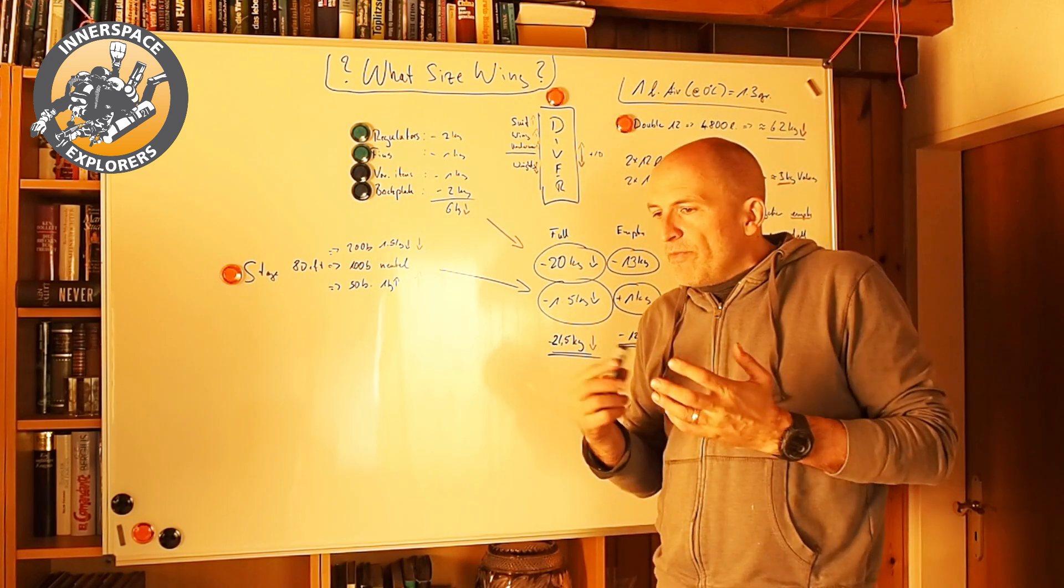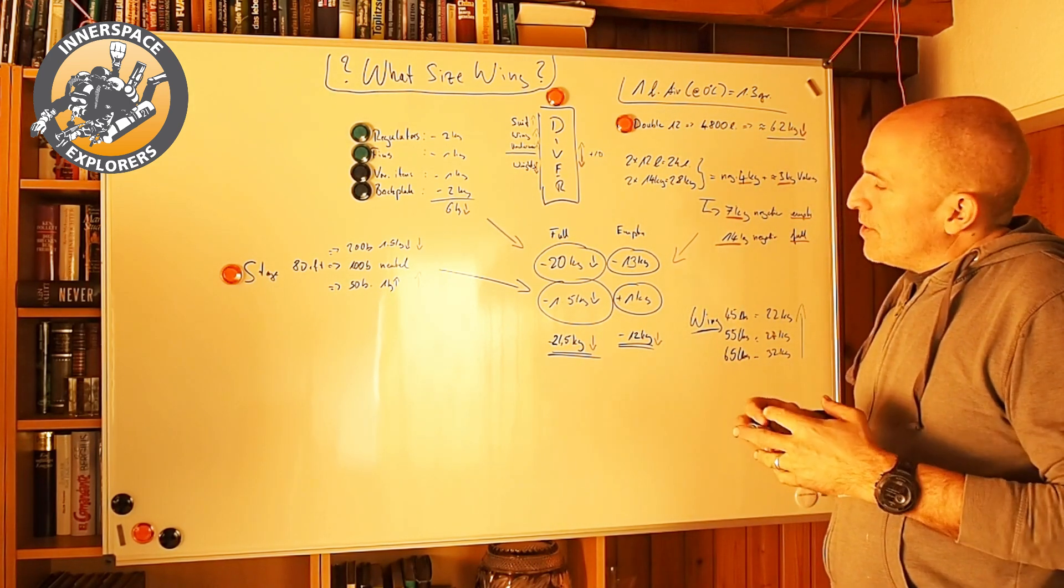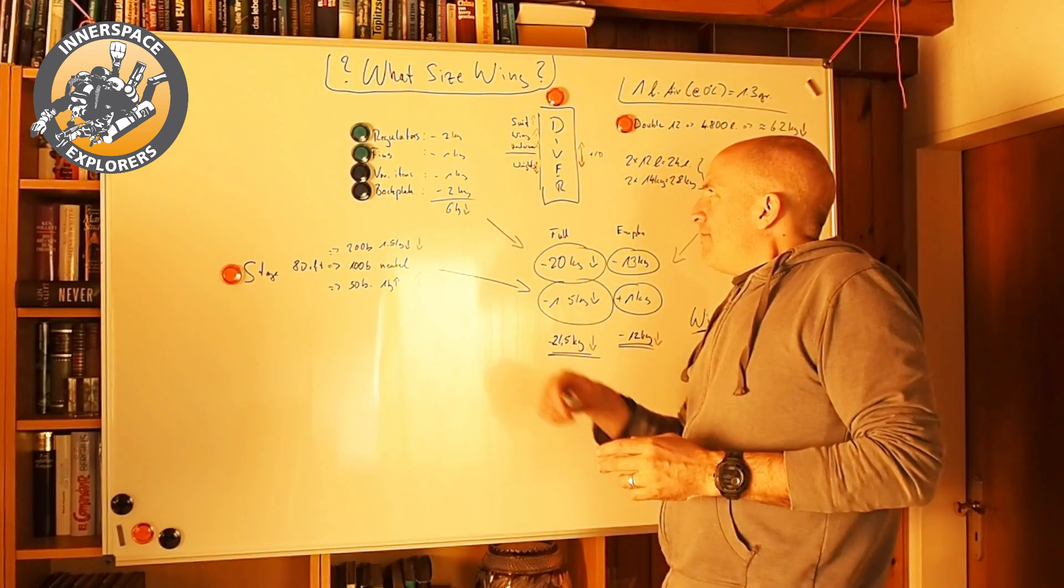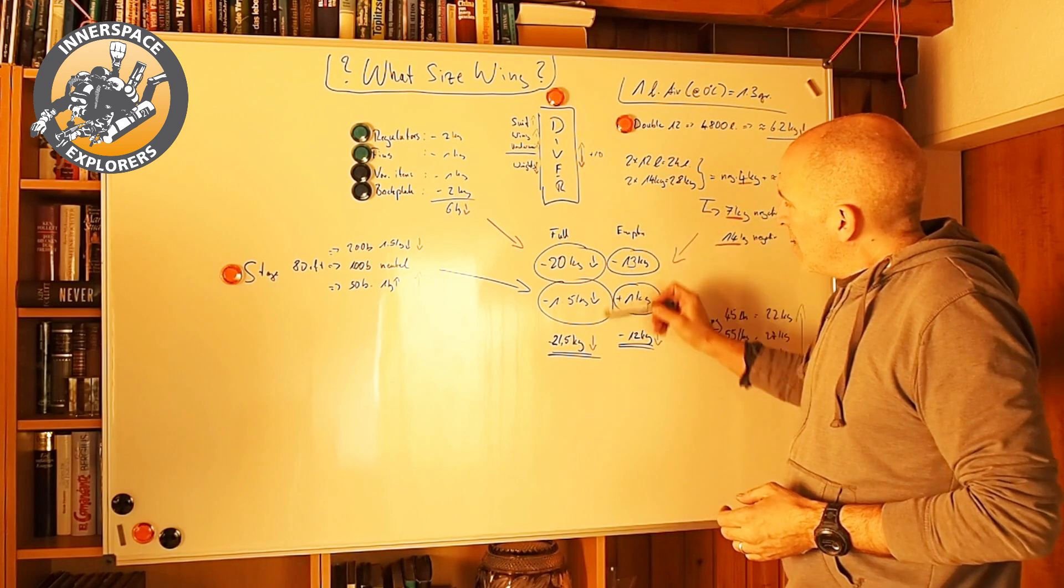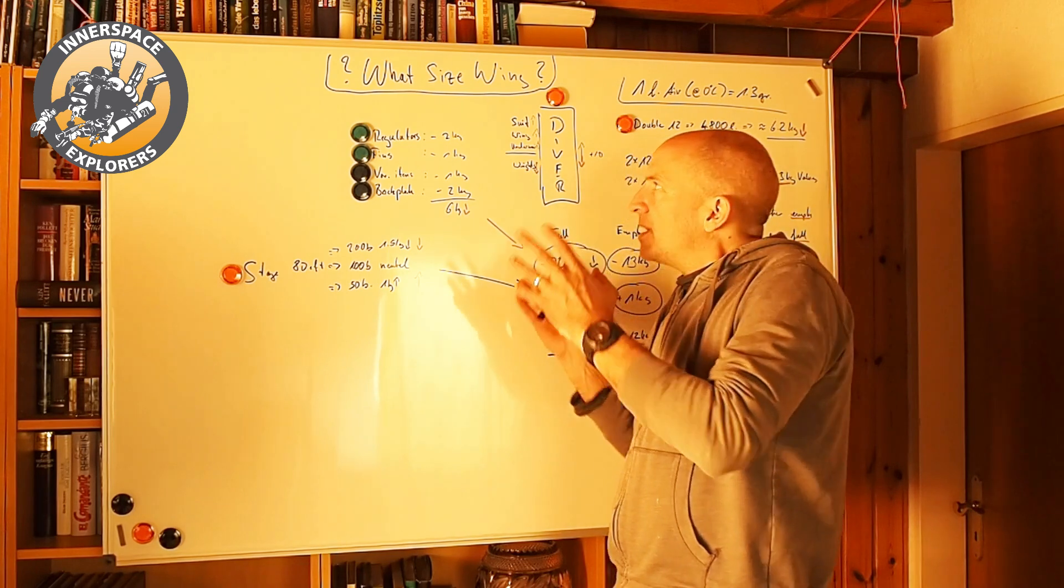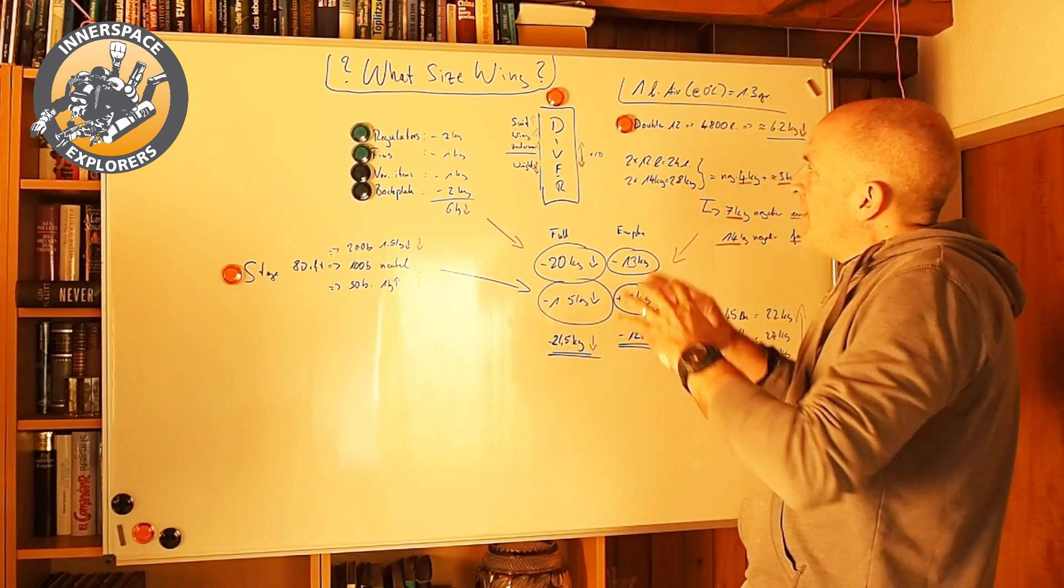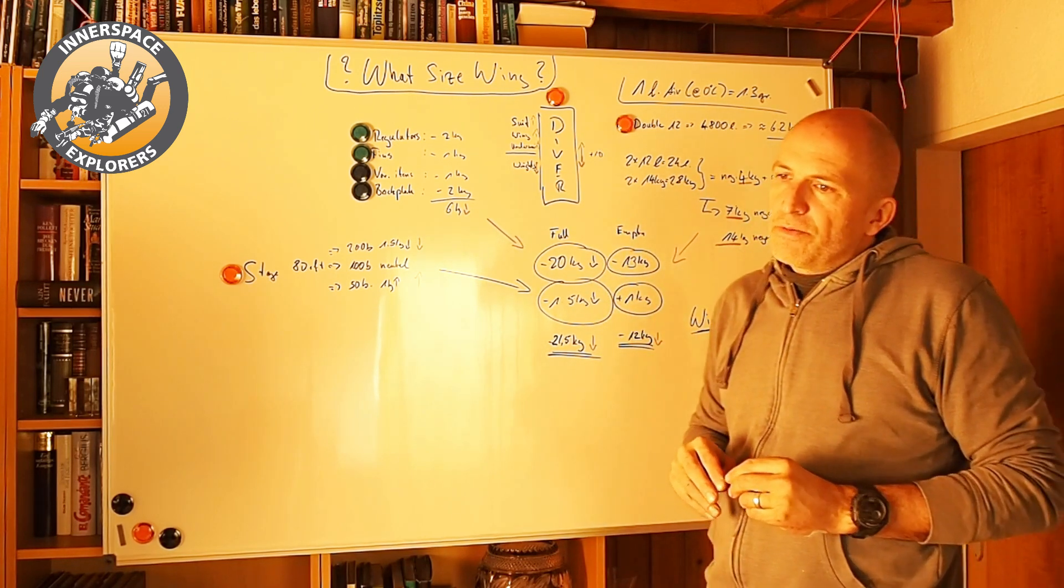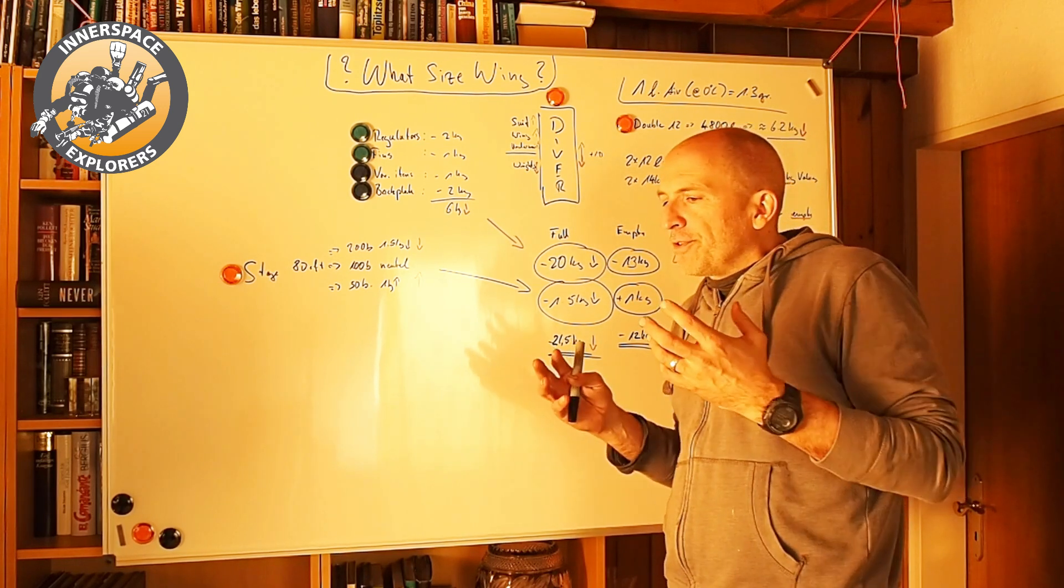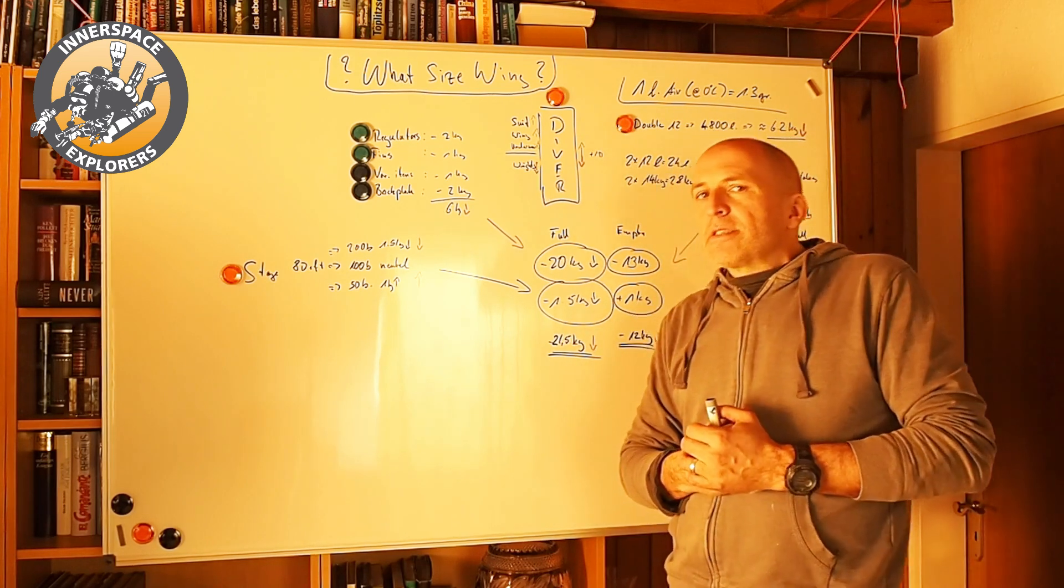So in that case, you just have to make sure, on the other hand, that you have enough weights, that in that scenario, you're still able to maintain a proper stop. But that's a different story. It doesn't have to do anything with the wing size. But generally, that is what you take into account when you think about, is that wing sufficient for my type of diving and for the gear I want to use with it? So I hope that makes sense and answers all the questions.